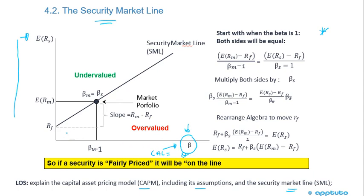Looking at the chart, we can see the expected return of the market, where the beta for the market equals 1. The expected return of the market is greater than the risk-free rate because there's more risk in the market. The expected return of the market minus the risk-free rate is the market risk premium. So looking at where beta equals 1, we can look at a stock that also has a beta of 1, and use that to look at the algebra for the CAPM equation.